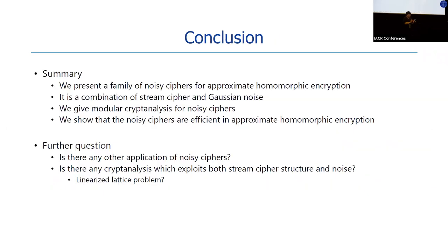In conclusion, we present a family of noisy ciphers for approximate homomorphic encryption: a combination of a stream cipher and Gaussian noise. We give modular cryptanalysis for noisy ciphers and show that they are efficient in approximate homomorphic encryption. Further questions include: is there any other application of noisy ciphers beyond transcyphering for approximate HE — for example, MPC or ZK-friendly ciphers? And is there any cryptanalysis that exploits both stream cipher structure and noise, such as an efficient algorithm for the linearized lattice problem analogous to the ideal lattice problem?